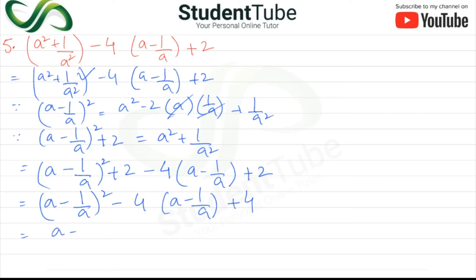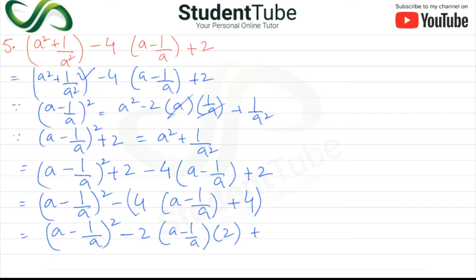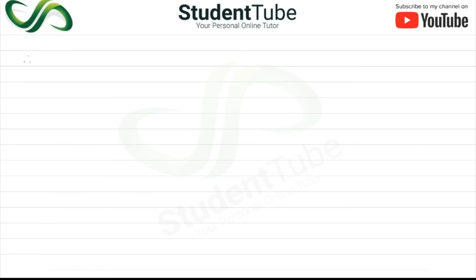Now, a minus 1 upon a, whole squared — we will factorize this whole expression. So if we take minus 2 here, and a minus 1 upon a, and then plus 4, it is a perfect square. So here we have the formula: A squared minus 2AB plus B squared, which equals A minus B, whole squared. So applying this formula: A is a minus 1 upon a, and B is 2.